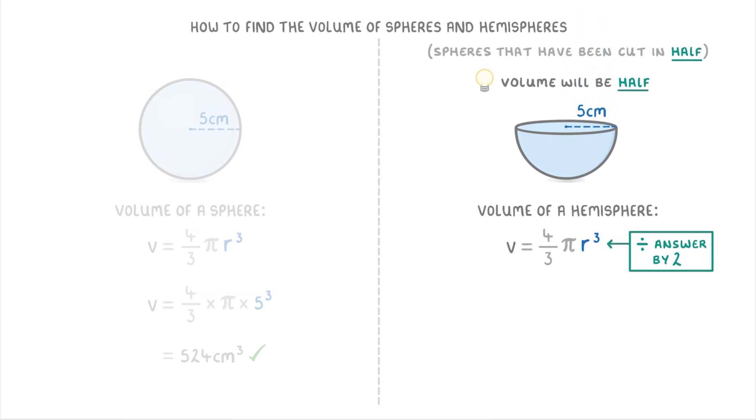So if the radius was 5 centimeters again, then we'd still do volume equals 4 thirds times pi times 5 cubed, to get 524 cubic centimeters, but then we'd have to divide the answer by 2 to get a volume of 262 cubic centimeters for our hemisphere.